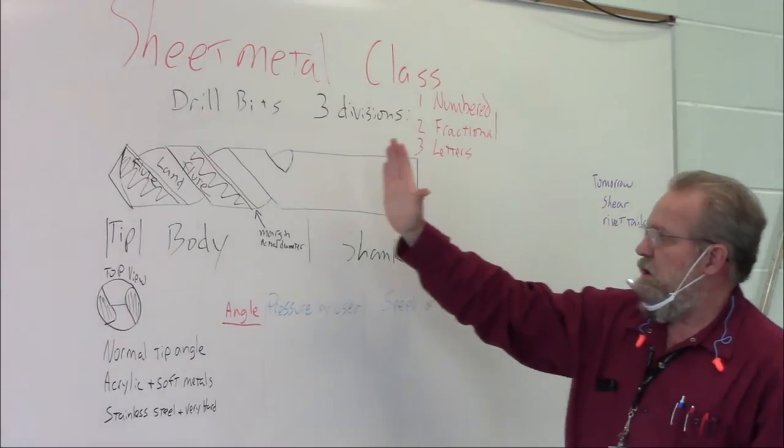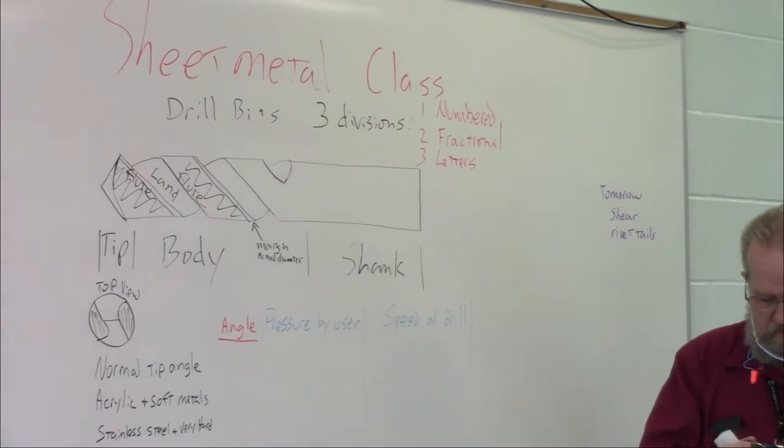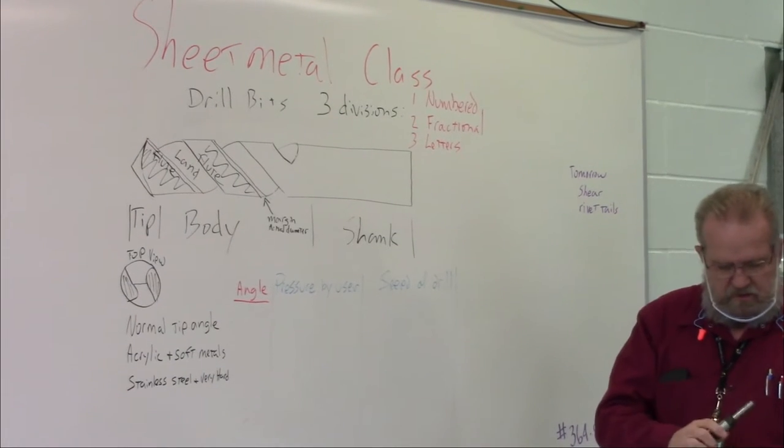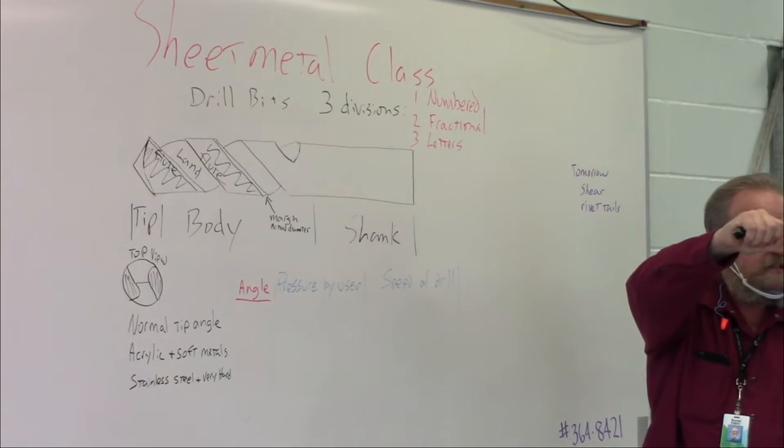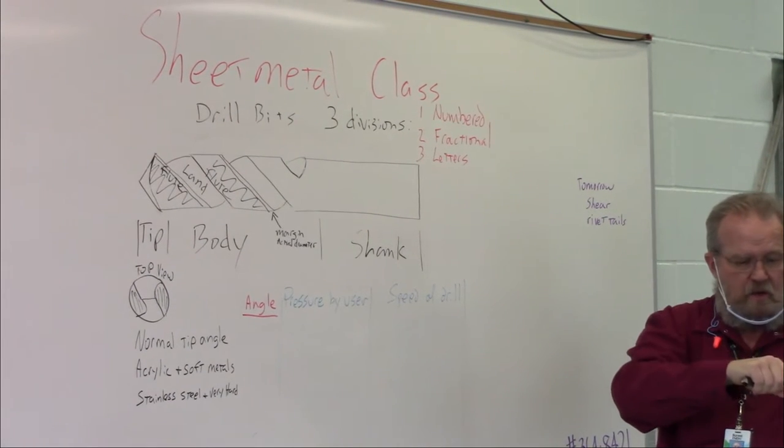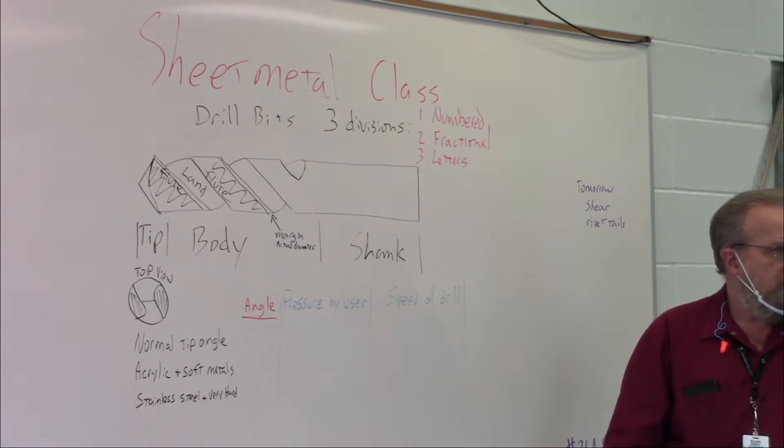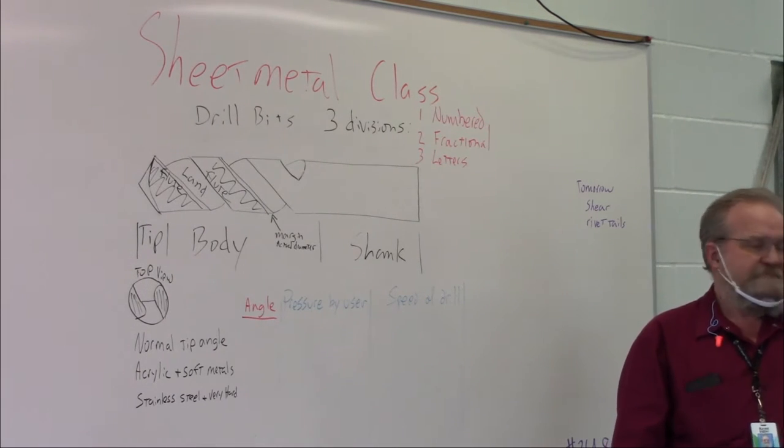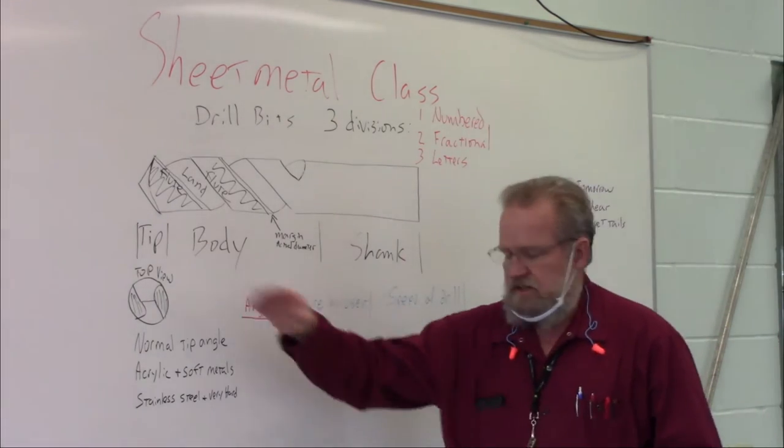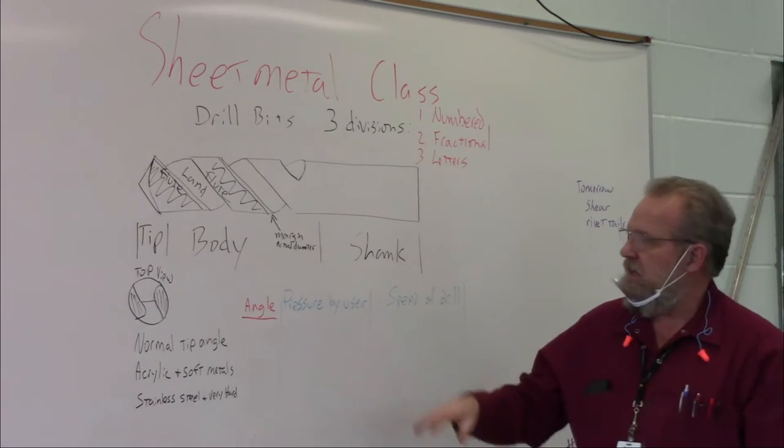The first part of the drill bit is called the shank. We did go over this a little bit earlier. What did we do with the shank? We put it in the drill chuck. I don't want to see you putting the fluted part into the chuck, understand? The shank is good enough. So the major portion of the drill bit is called the body.